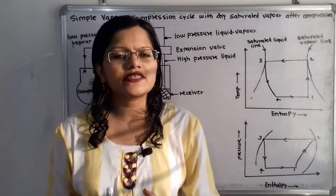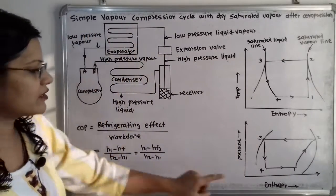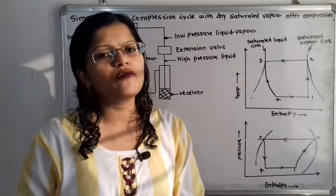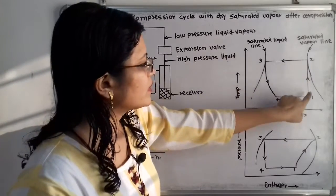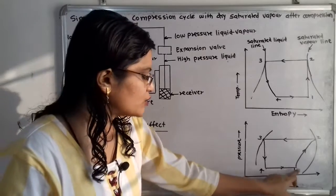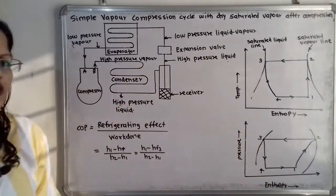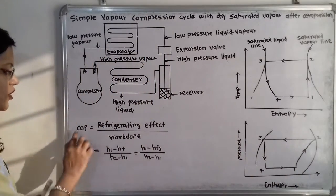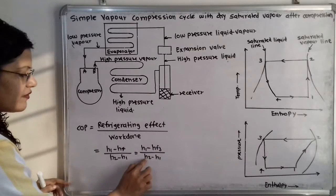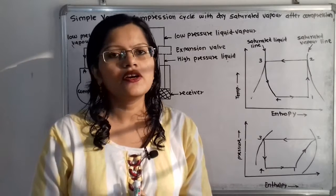The coefficient of performance (COP) equals refrigerating effect divided by work done. The refrigerating effect occurs in the evaporator (process 4 to 1) and equals H1 − H4 or H1 − HF3. The work done occurs in the compressor (process 1 to 2) and equals H2 − H1. Therefore: COP = (H1 − H4) / (H2 − H1) = (H1 − HF3) / (H2 − H1). This formula is used for solving problems.